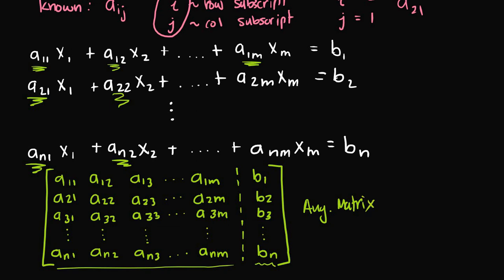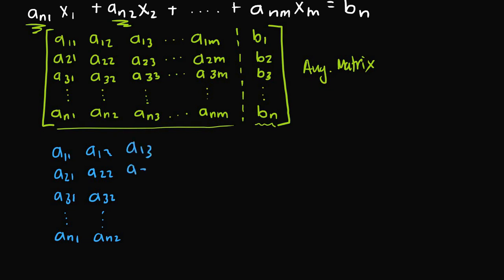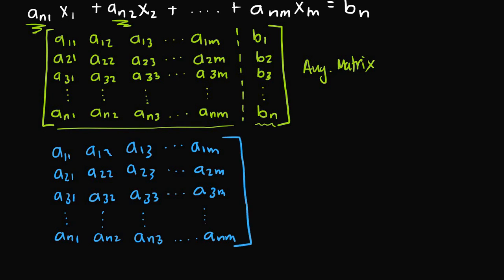The coefficient matrix is simply the augmented matrix without the right-hand side constants — only the coefficients. The coefficient matrix contains a₁₁, a₂₁, a₃₁, up to aₙ₁; then a₁₂, a₂₂, a₃₂, up to aₙ₂; then a₁₃, a₂₃, a₃₃, up to aₙ₃; all the way through to a₁ₘ, a₂ₘ, a₃ₘ, and aₙₘ. It does not include the constants column.